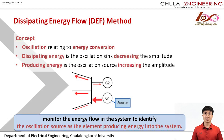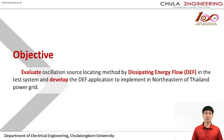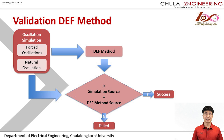The Dissipating Energy Flow (DEF) method is an efficient way to locate the oscillation source. Oscillation is related to energy conservation: dissipating energy decreases the oscillation amplitude, while producing energy increases the amplitude. Using this energy method, the oscillation source is the element producing energy into the system. The objective of this thesis is to evaluate the DEF method and develop applications for locating the oscillation source in north-eastern Thailand. The DEF method is validated by simulating the oscillation source in a test system, then using the simulated data to calculate the source via the DEF method and comparing with the simulated source.